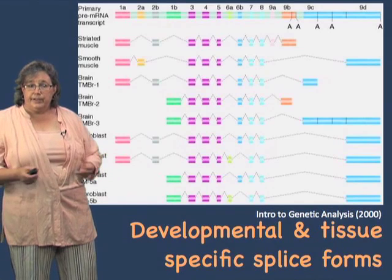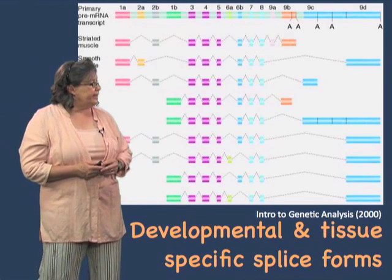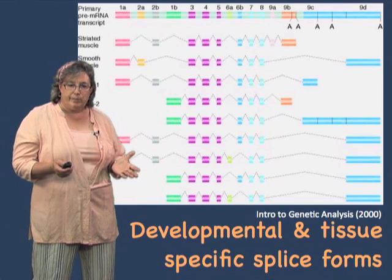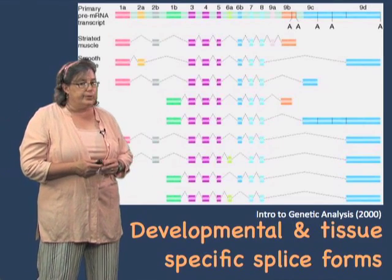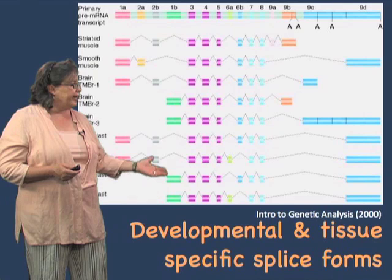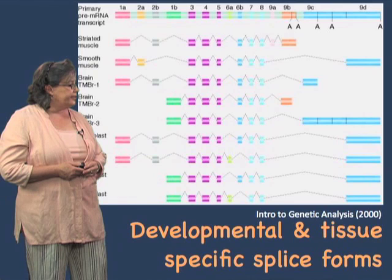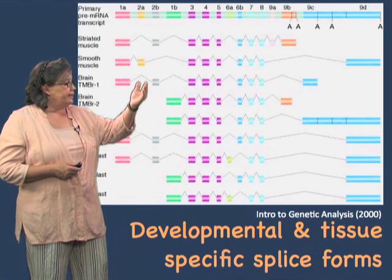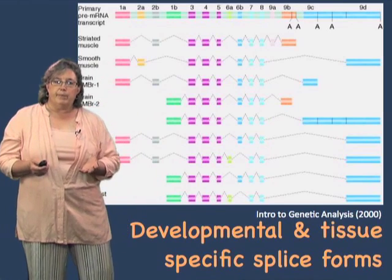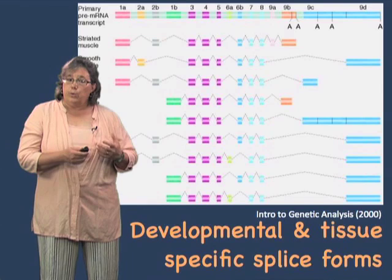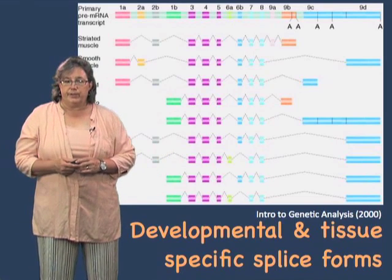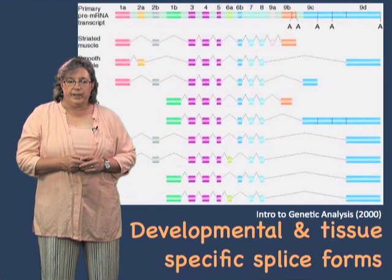How many different proteins can be made from one gene? This is the alpha-tropomyosin gene from rat, and these are some of the different splice forms. You can see that there are many different splice forms in fibroblasts — essentially undifferentiated cells — and other isoforms in the brain and in smooth muscle. One of the important things about splicing is that it can be developmentally and tissue-specifically controlled, so one gene in one tissue might make one protein, but in another tissue it makes a very different protein. That's how we add to complexity.